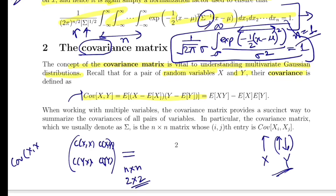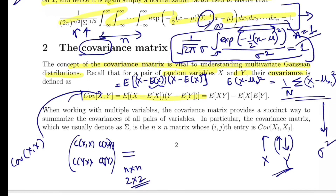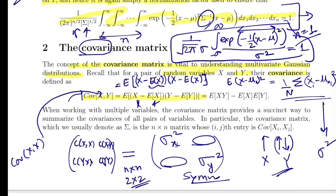For cov(x,x), substituting y=x gives E[(x - E[x])(x - E[x])], which is E[(x - mu_x)^2]. This is just the average of (x - mu_x)^2 across all data points — which is the variance, sigma_x squared. Completing the full matrix, the diagonal entries are sigma_x^2 and sigma_y^2, and the off-diagonal entries are symmetric, making this a symmetric matrix.